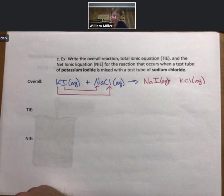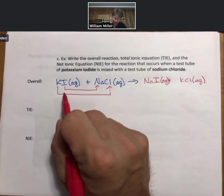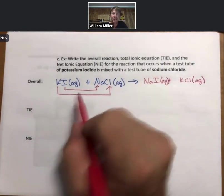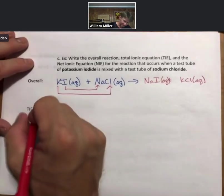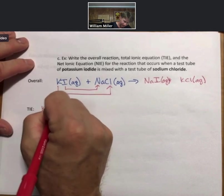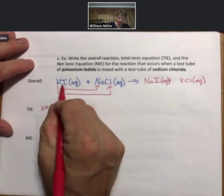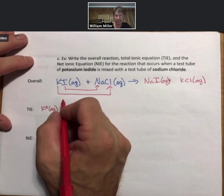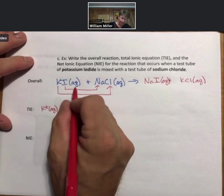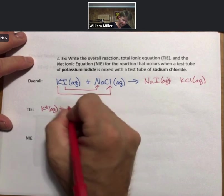Before we move on, balance everything is fine with a one coefficient. Now the TIE. TIE is going to have any strong electrolyte, which strong electrolytes are ionic compounds that dissolve will break up into ions.